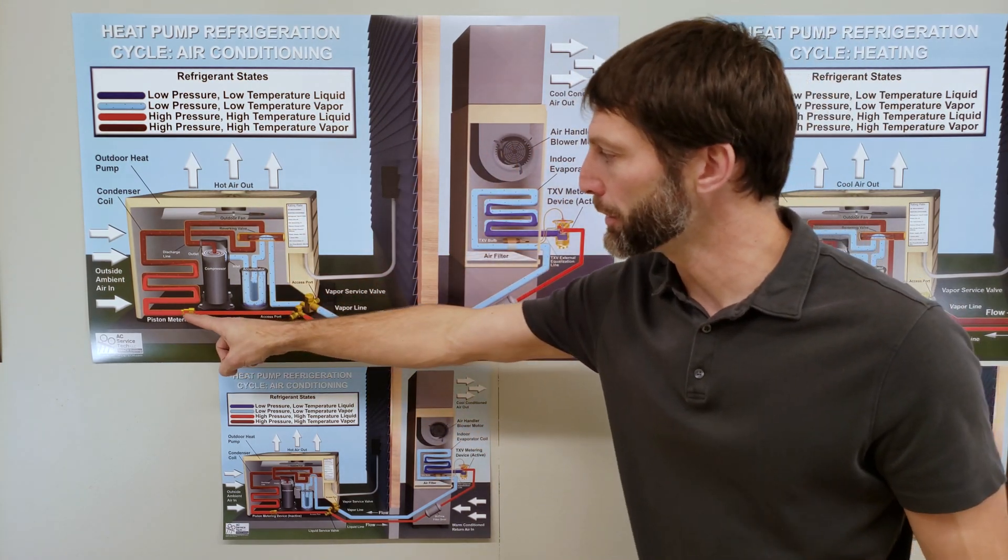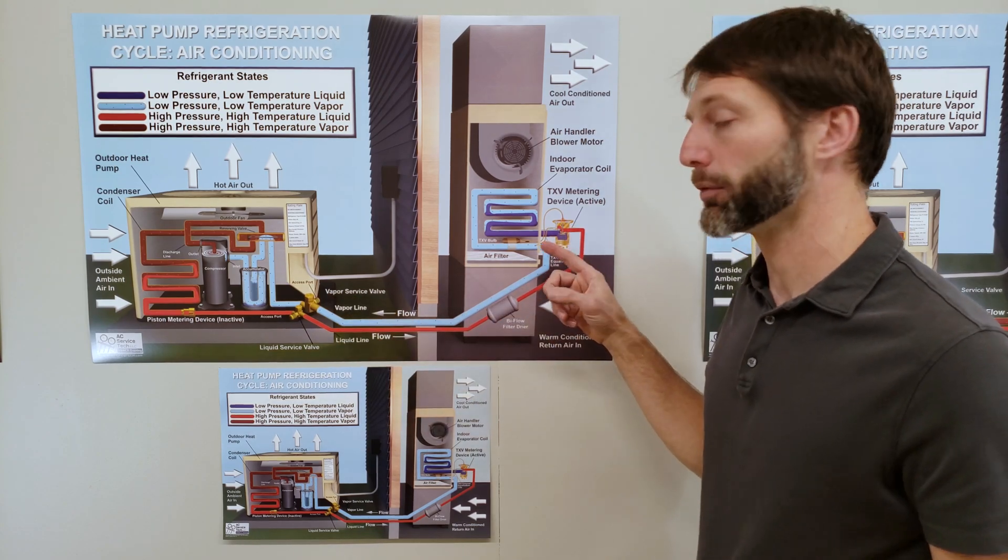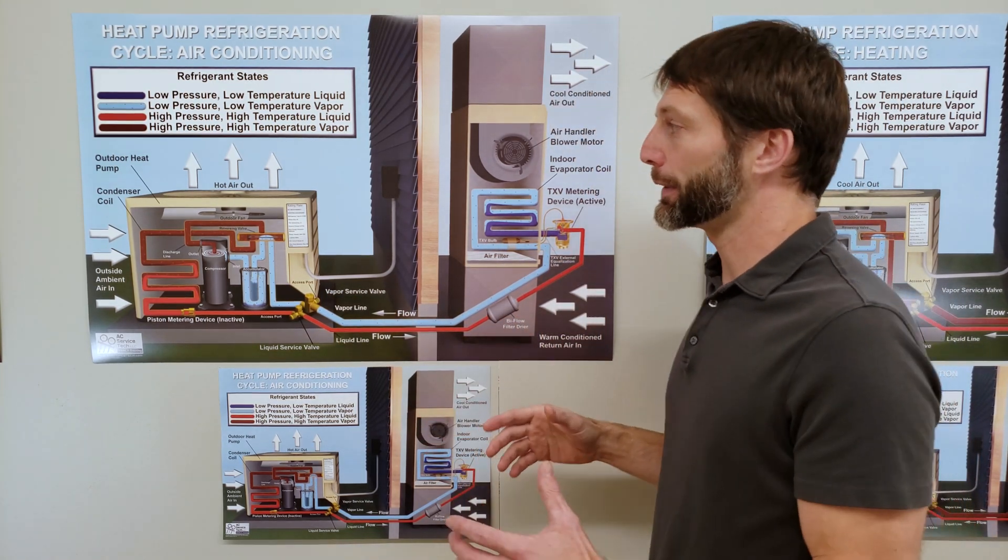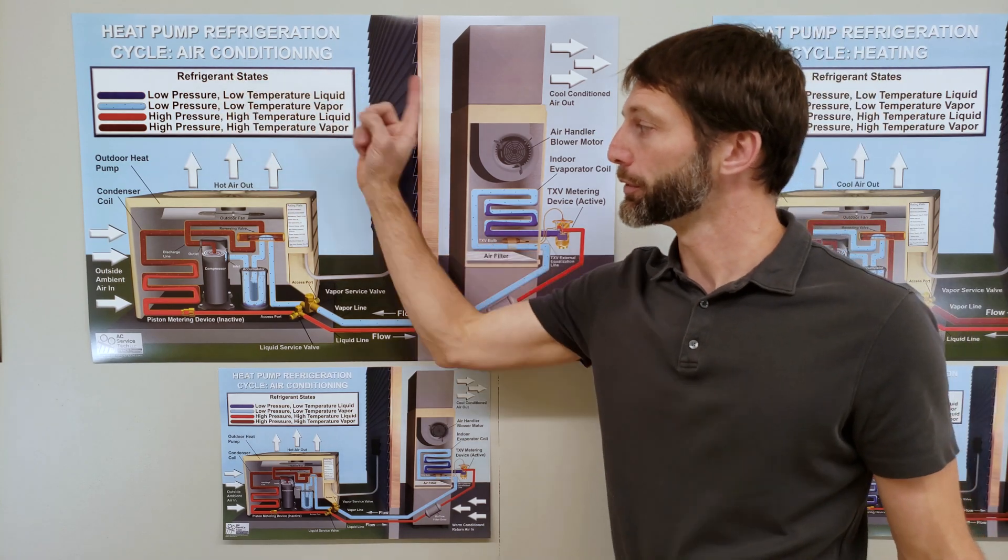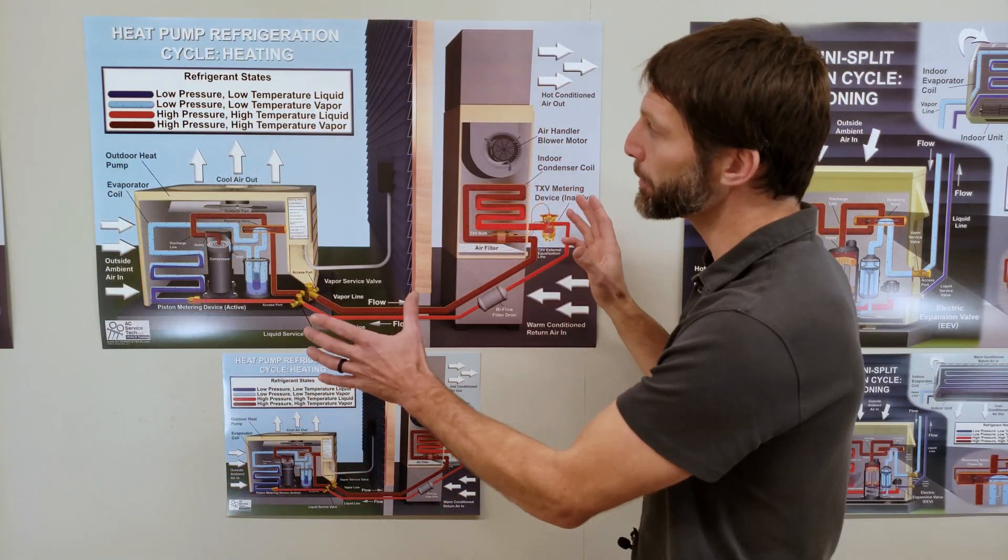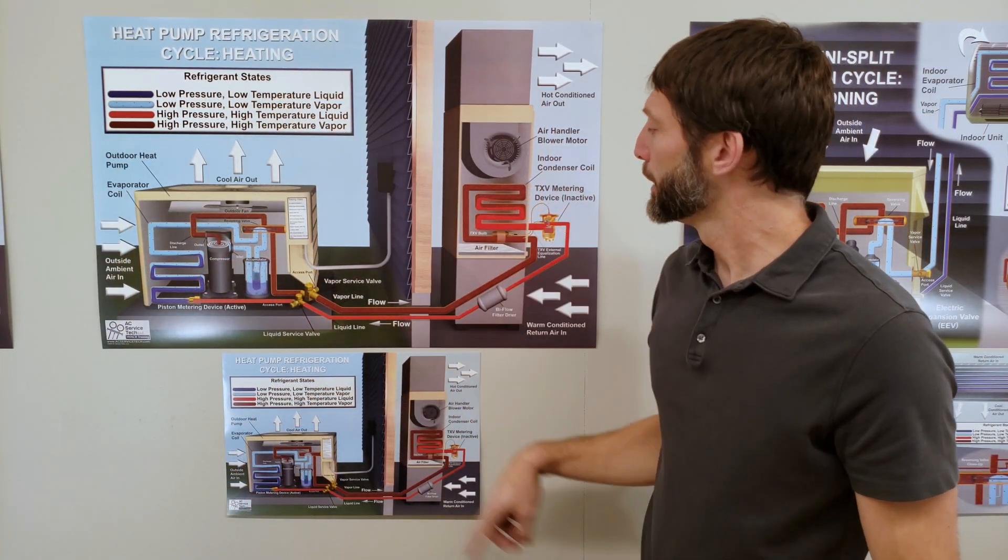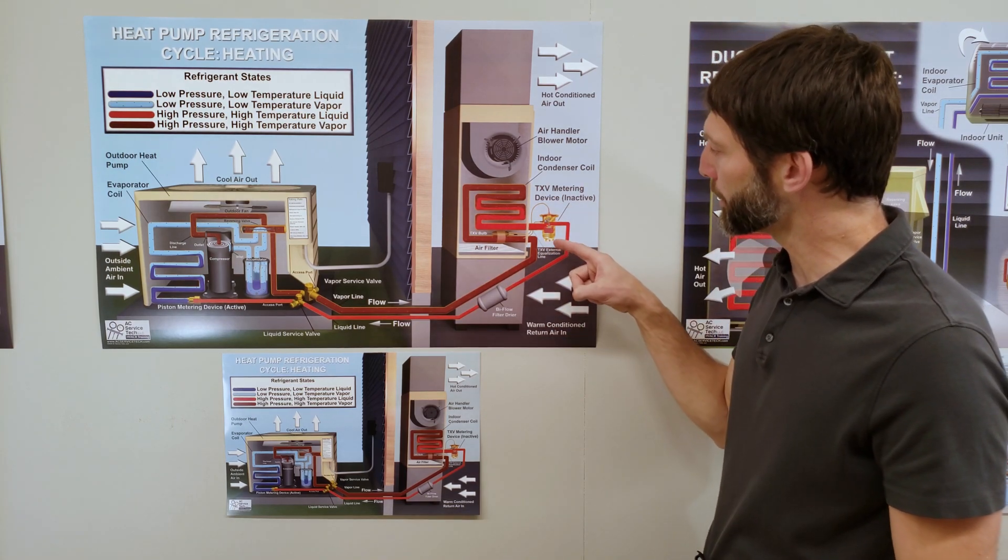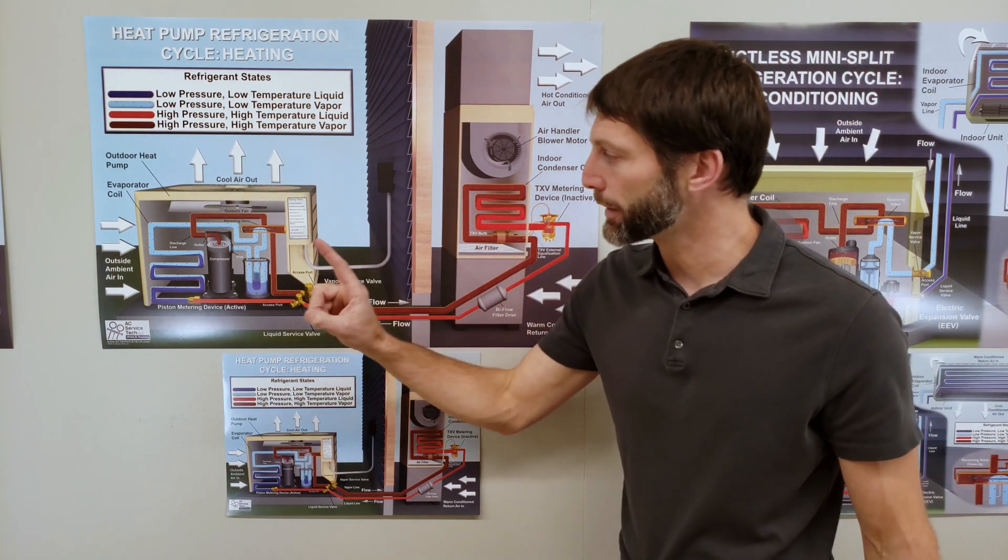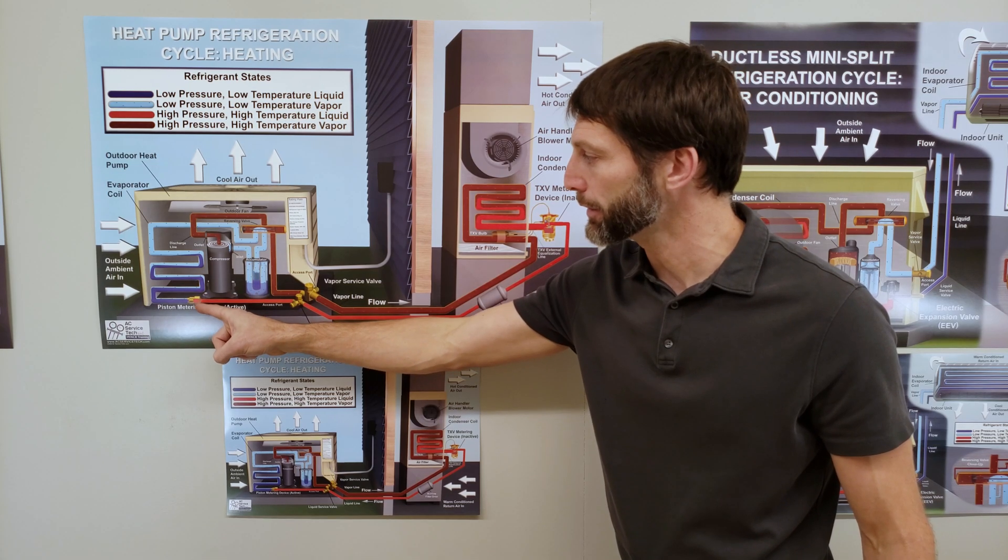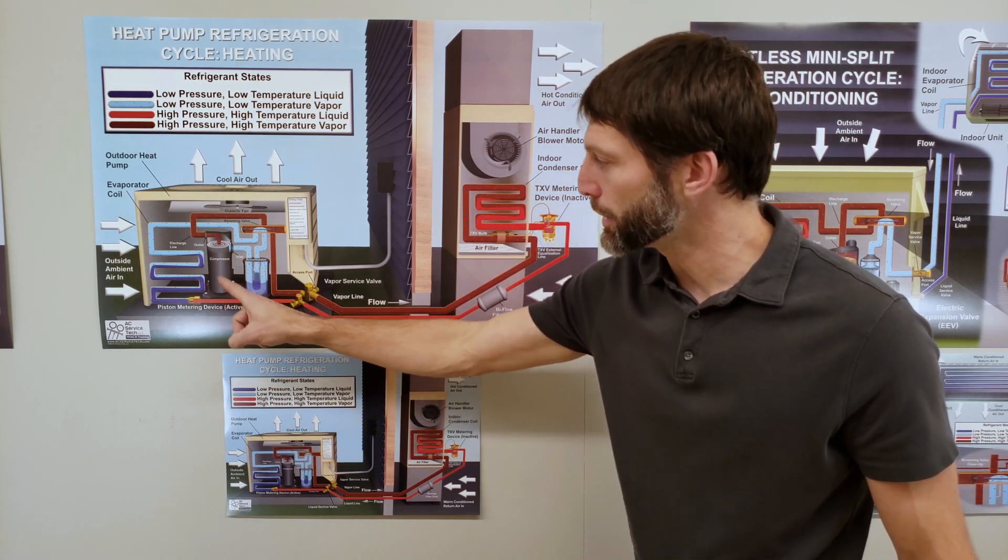You have two metering devices, one here and one here. One's active and one's inactive, and that changes depending on what mode you're in. This one's in heating mode and it's indicated right there. You have an inactive metering device here which is your thermostatic expansion valve, and here's your active metering device out here. You do see a change in pressure.